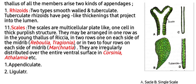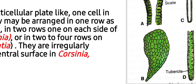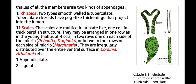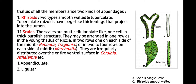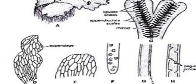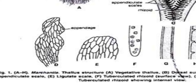Second are scales. The scales are multicellular, plate-like, one cell thick, and purplish in color. They may be arranged in one row as in young thallus of Riccia, in two rows one on each side of the midrib as in Reboulia and Targionia, or in two to four rows on each side of the midrib as in Marchantia. They are irregularly distributed over the entire ventral surface in Corsinia and Aitchemia.